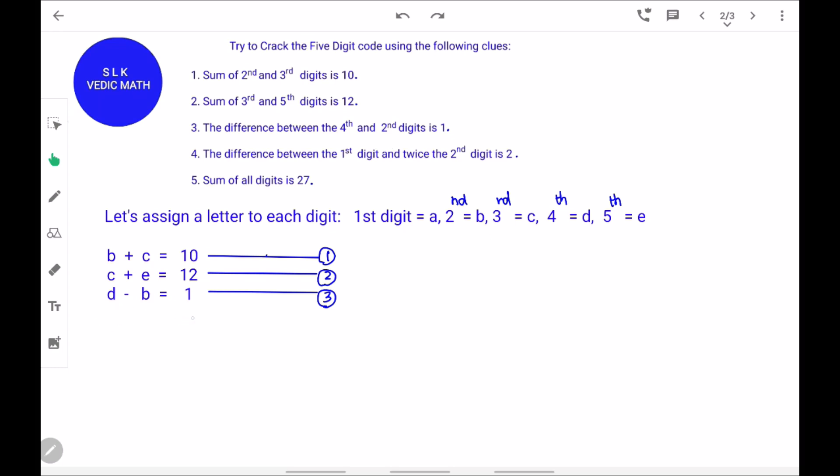In the fourth clue, it says the difference between the 1st digit and twice the 2nd digit is 2. So, A minus 2B equal to 2.